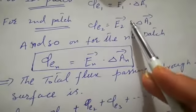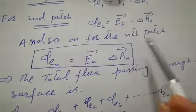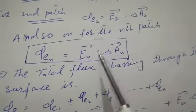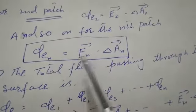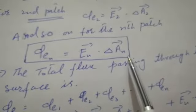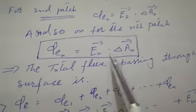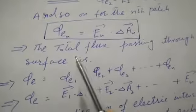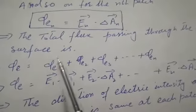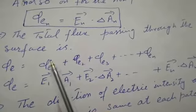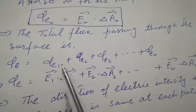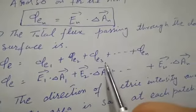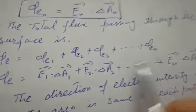We will have Φ_E3, Φ_E4, and so on, up to Φ_En, where Φ_En = En·ΔAn. The total flux passing through the closed surface is the sum of all patches: Φ_E1 + Φ_E2 + Φ_E3 up till Φ_En.